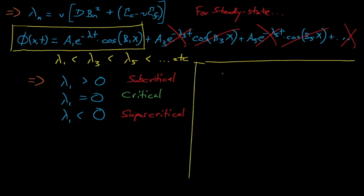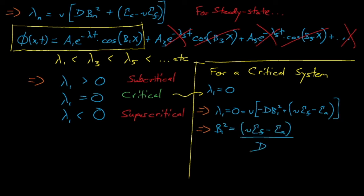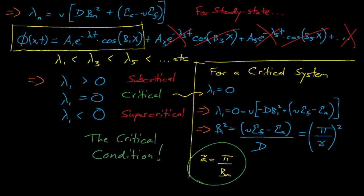Thus, if our system is to remain exactly critical, then the term from our fundamental mode cosine flux must equal nu sigma fission minus sigma absorption all divided by D, which is just the material buckling for this system. b1 equals 1 times π divided by a tilde, which allows us to solve for the extrapolated width of our slab as a function of the material buckling. This relationship makes sense. Systems with higher fission cross-sections or lower absorption cross-sections should require a smaller critical mass.